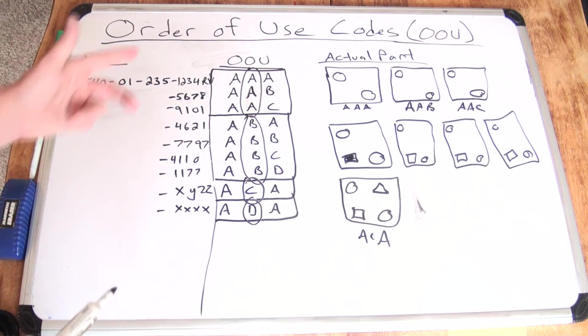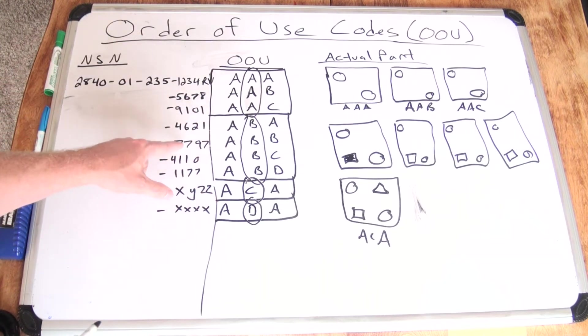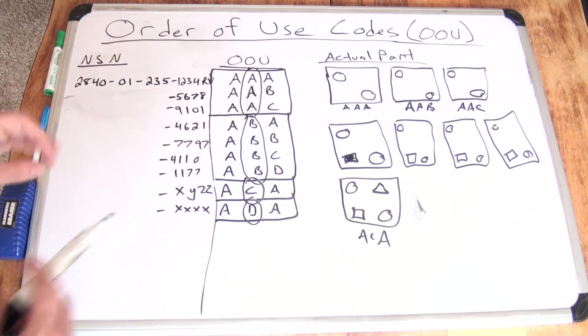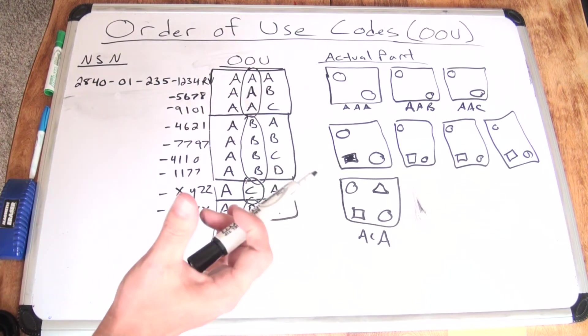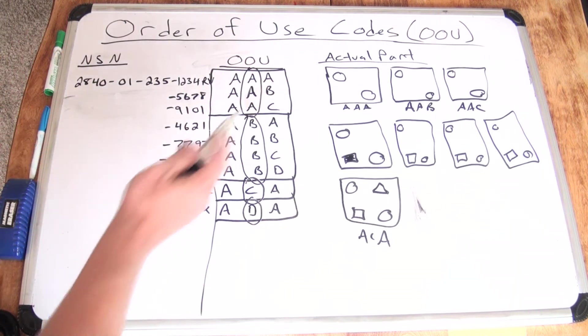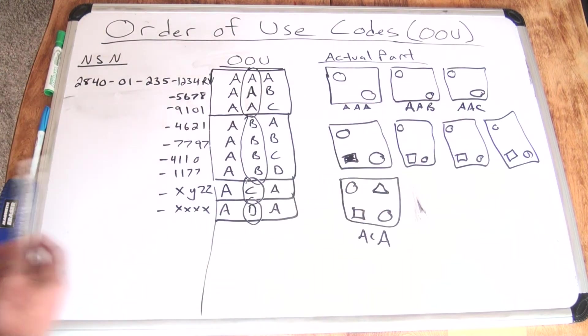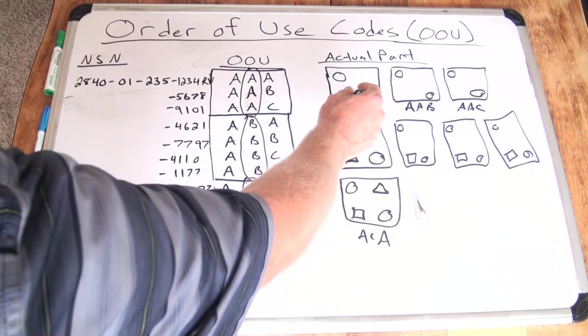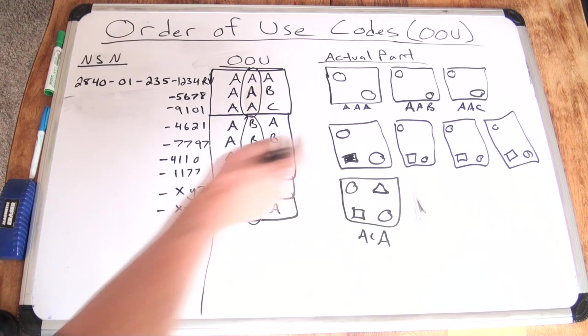Now, can you go the other way around? If you needed, if a technician ordered a 7797 and absolutely needed that for a special configuration, could you supply them with one of these A subgroup parts? The answer is no, because the A does not have that square connector.